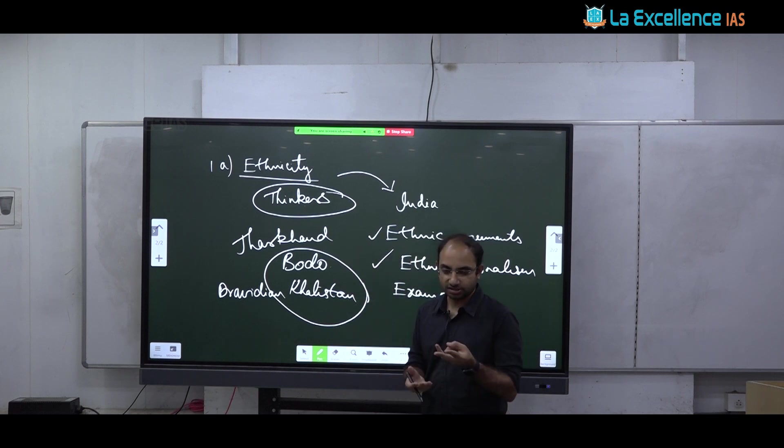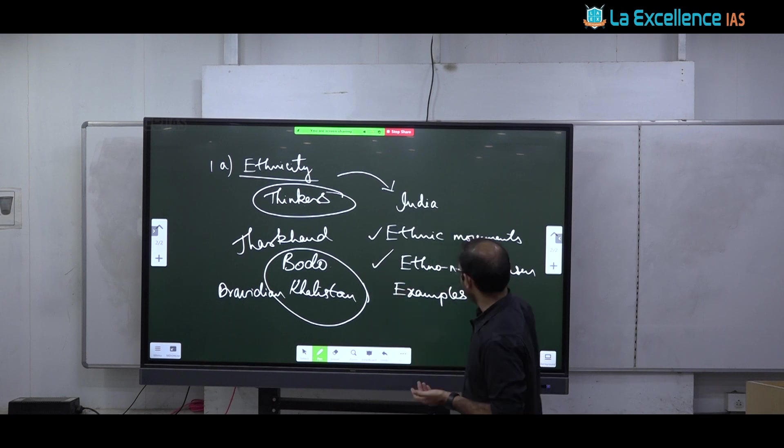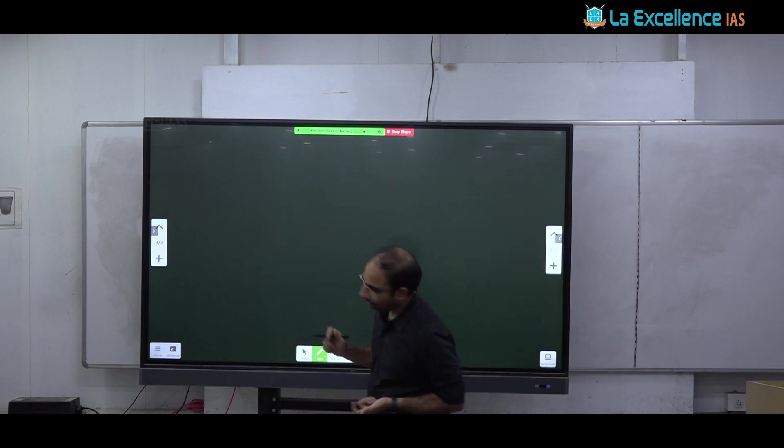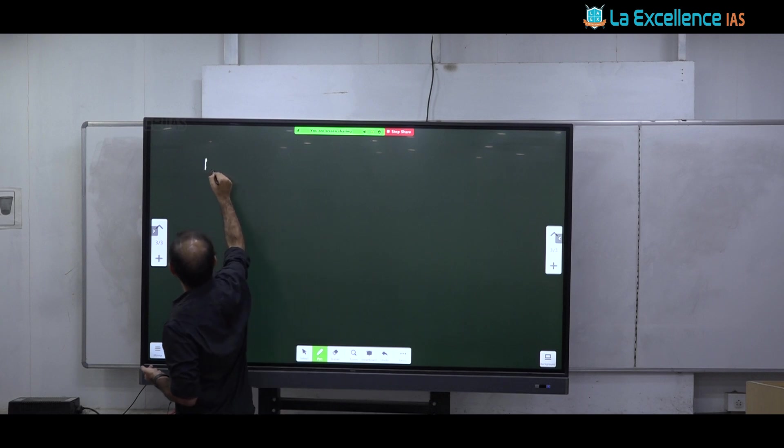So here you can go beyond it. But even if you think, restrict yourself to tribal issues, you have so many tribal examples: Jharkhand movement, Bodo movement, Satrazgarh movement, Naga land movement. But for ethnicity, you can go beyond tribal issues. It is a generalistic phenomena and not just restricted to tribes.